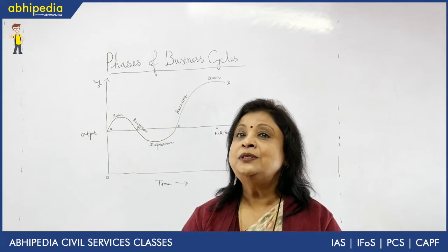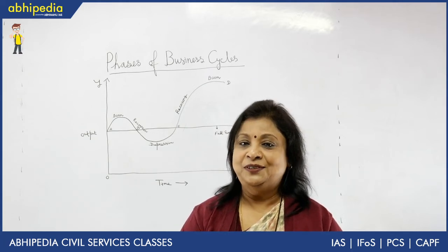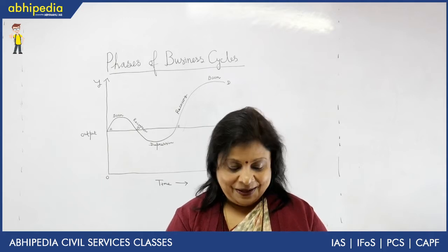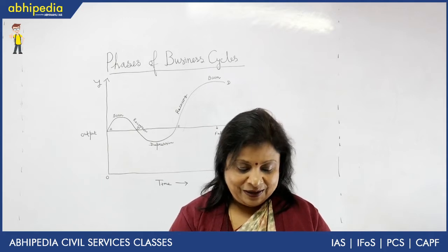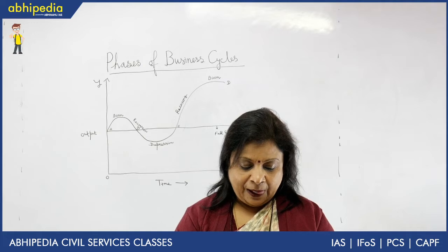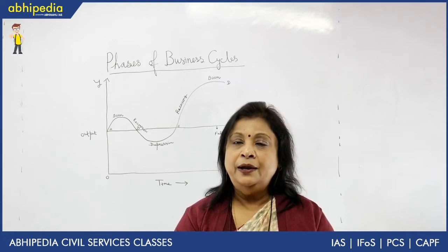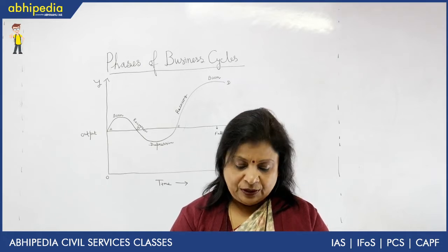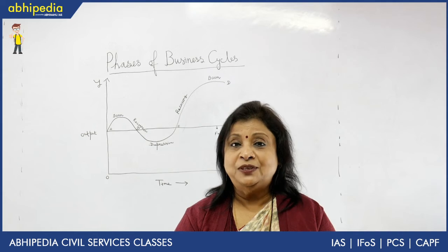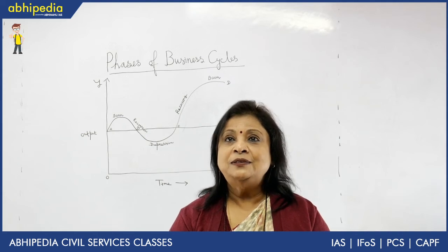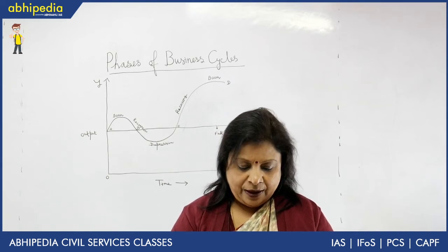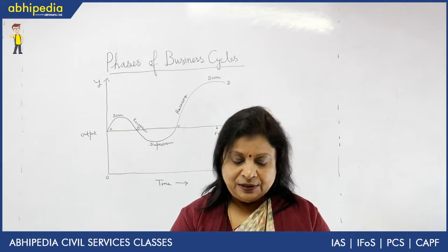The third phase — you can see it in the diagram — is depression. During depression, once the process of recession starts, it gains momentum and ends in depression. It is called hopeless depression; there is a sense of hopelessness in the economy and the level of output falls.